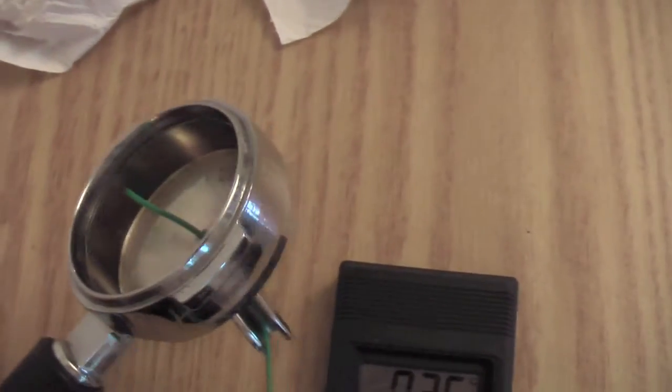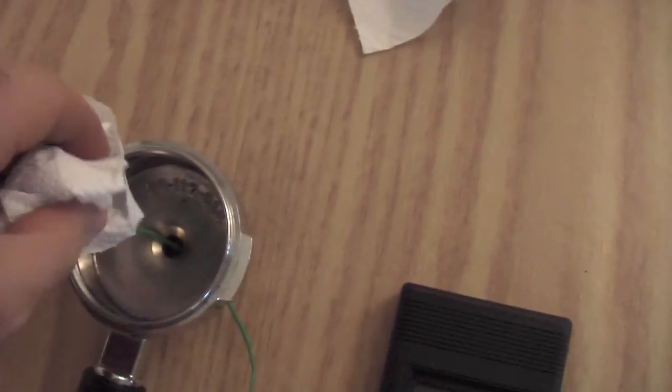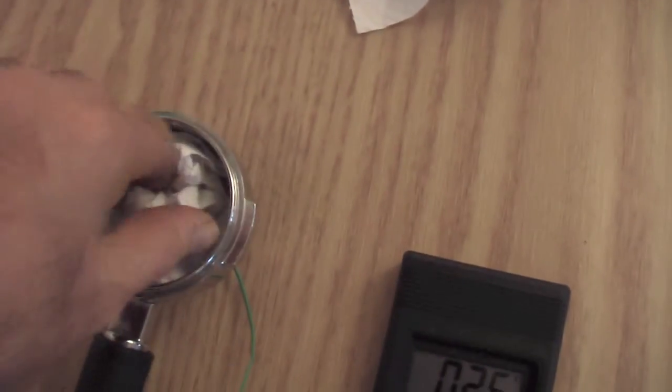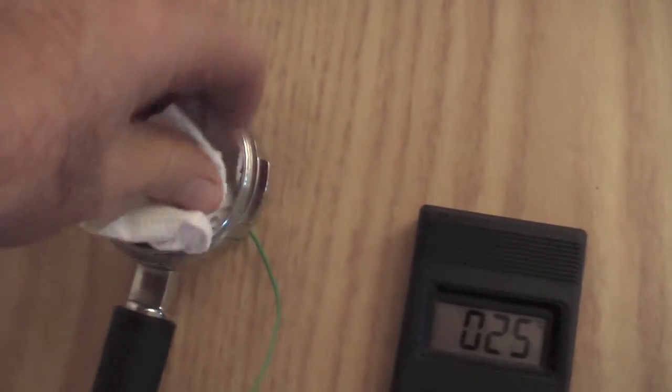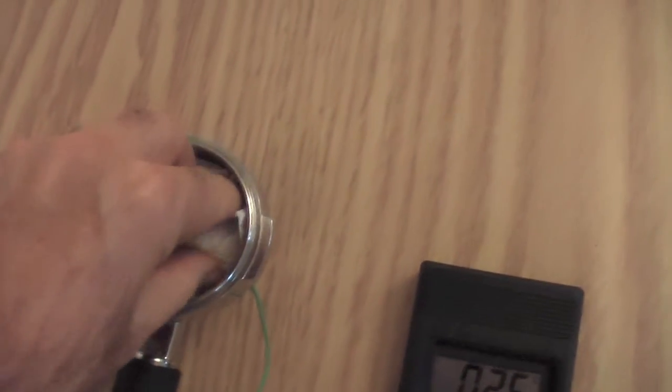So I fish the wire up through the bottom of the portafilter, and then I stuff in the top of the portafilter some paper towel just to slow down the water so it's got time to register on the gauge.